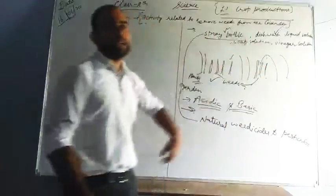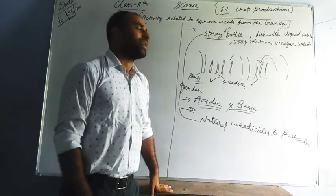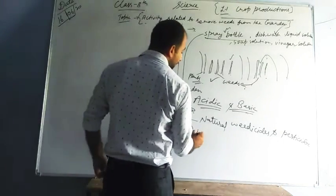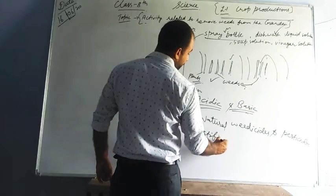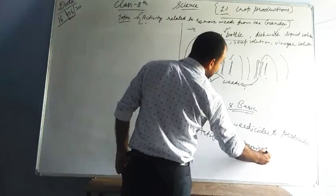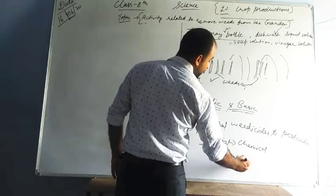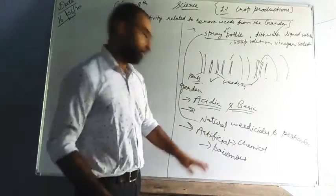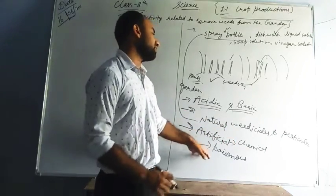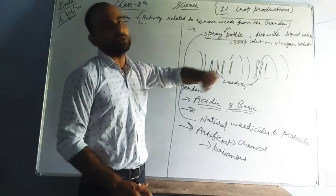Now what is the reason we are preparing this from natural things only? Because artificial weedicides and pesticides are made up of chemicals, and chemicals are poisonous in nature — they are harmful to us. That is why we are using natural weedicides like soap solution, dishwash liquid solution, and vinegar solution.